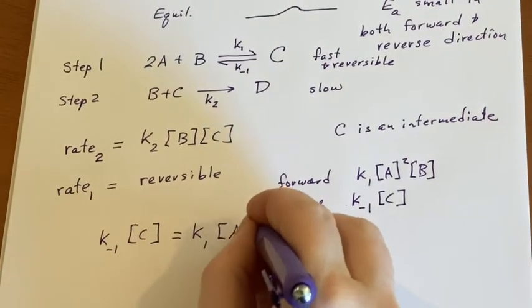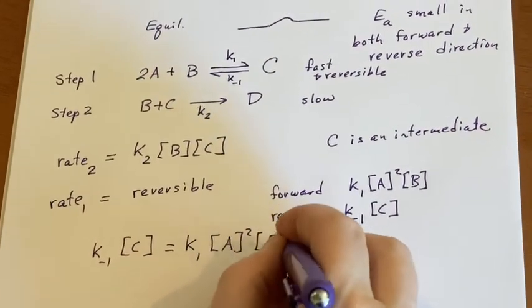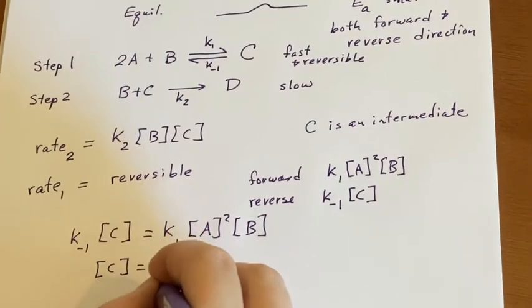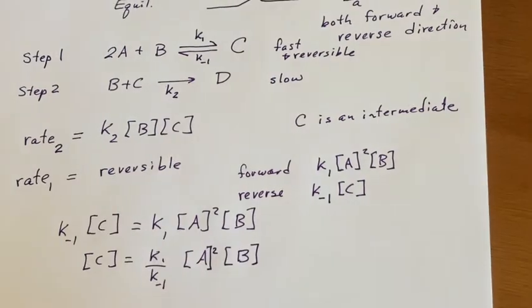Since K₋₁[C] equals K₁[A]²[B], that means [C] equals K₁/K₋₁ times [A]²[B].